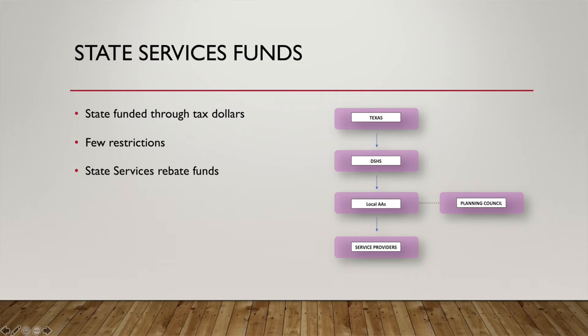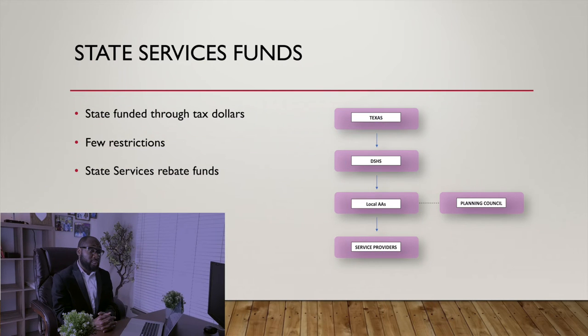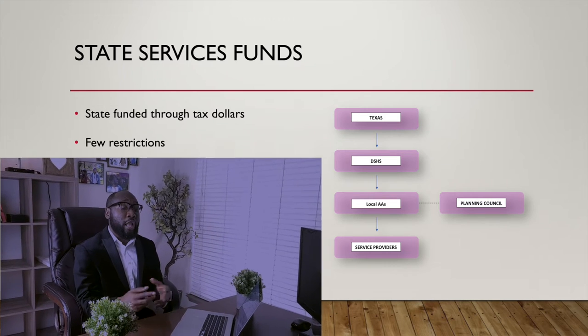For the state services fund, that's a little bit different and has some restrictions to it, but it's pretty much the same process. The money comes from the state to the Department of Health and Human Services, and the Department of Health and Human Services allocates the money to the local administrative agent. The local administrative agent, working together with the planning council, allocates the money to sub-recipients or providers, and the provider delivers the service to people living with HIV and AIDS.